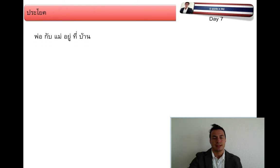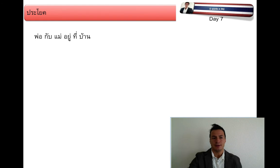Sentences: พ่อ กับ แม่ อยู่ที่บ้าน — Father and mother are at home, or are in the house.